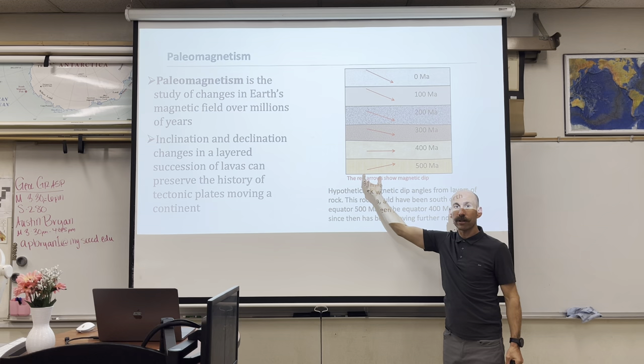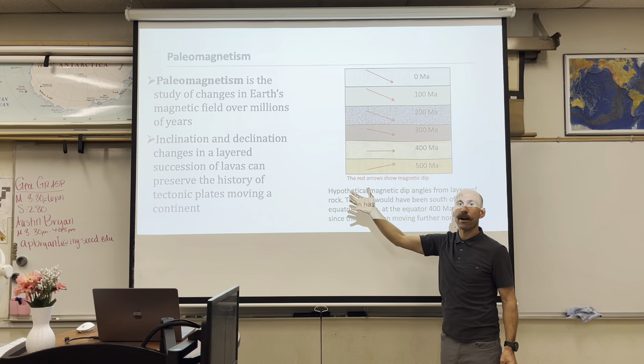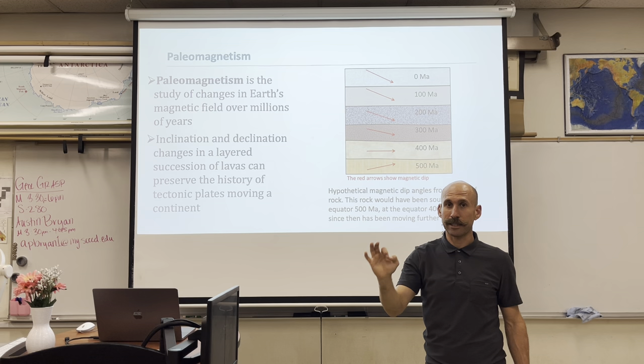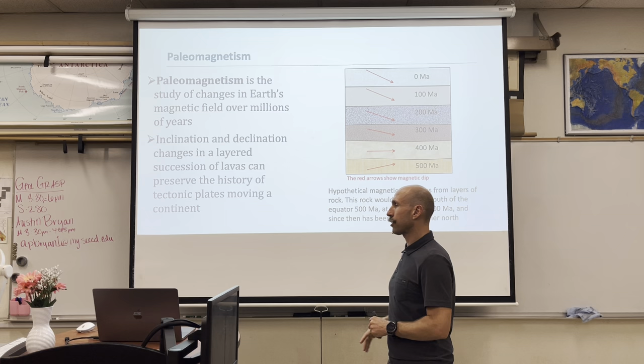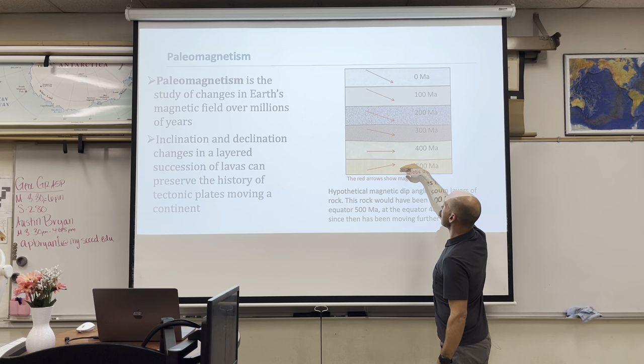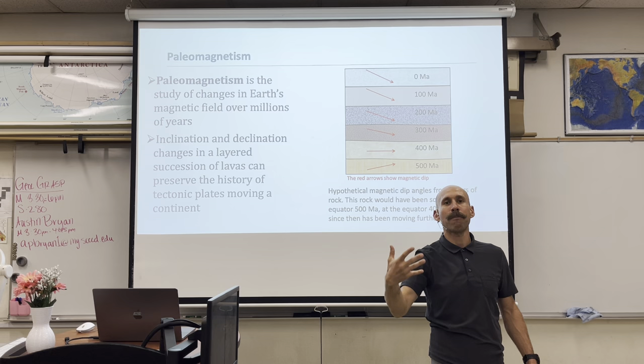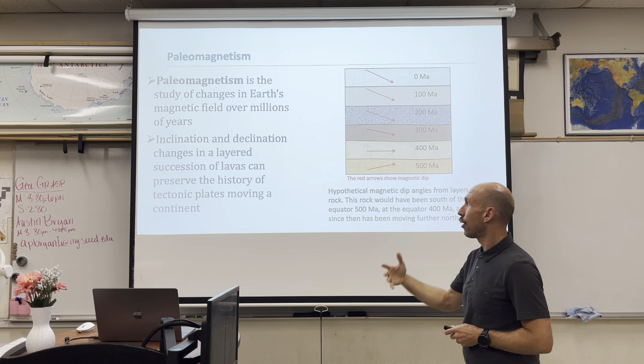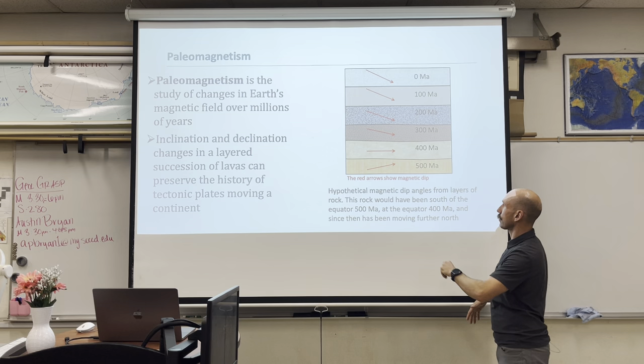Rocks preserve Earth's inclination and declination at the time of their deposition — or for igneous rocks, at the time of their crystallization. This is a really important concept for making the leap from continental drift to plate tectonics. Inclination and declination are preserved in the layers of rocks, and we can study these rocks in what's known as paleomagnetism — the study of changes of Earth's magnetic field over long periods of time, hundreds of millions of years.